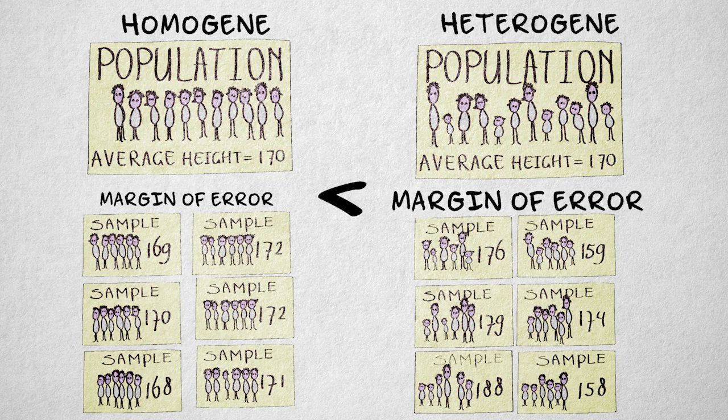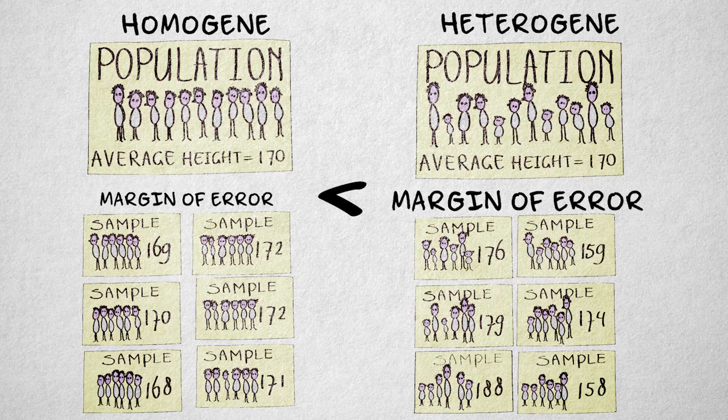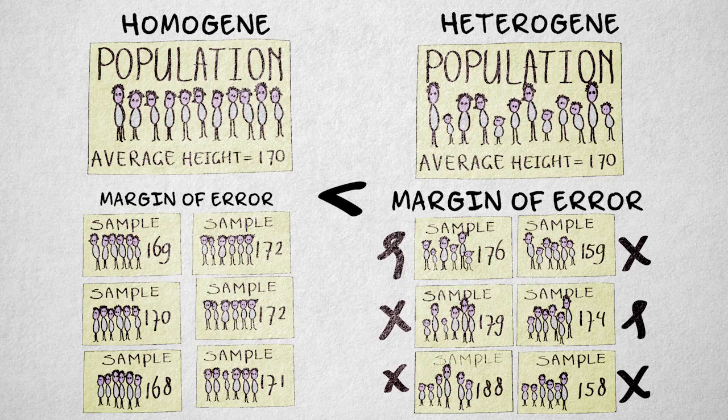If values in the population vary widely, then a sample is more likely to accidentally over or underestimate the true population value.